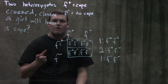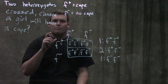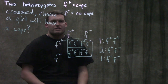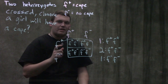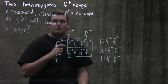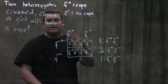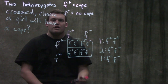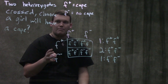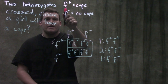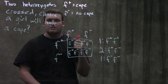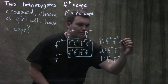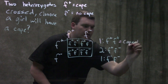Once we decide what sex we're talking about, we go back through and assign phenotypes based on that sex, because remember it's dominant in one and recessive in the other. We're asking about a girl, and capes are recessive in females. The only way a girl shows a recessive trait is if she has two copies of that allele. So a female needs two f-plus alleles to show the cape.